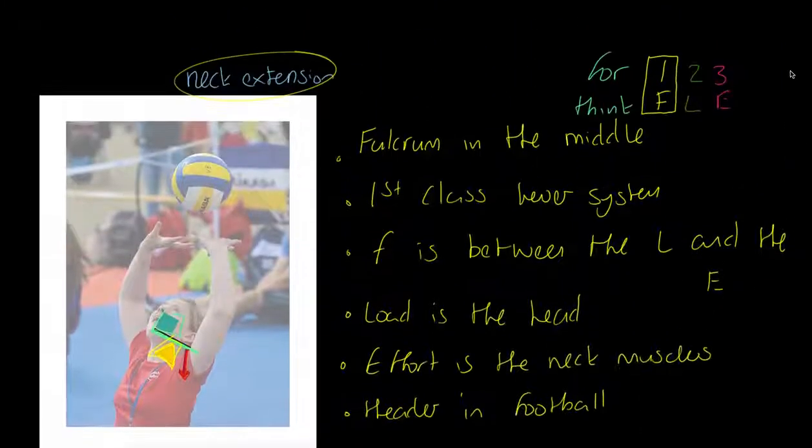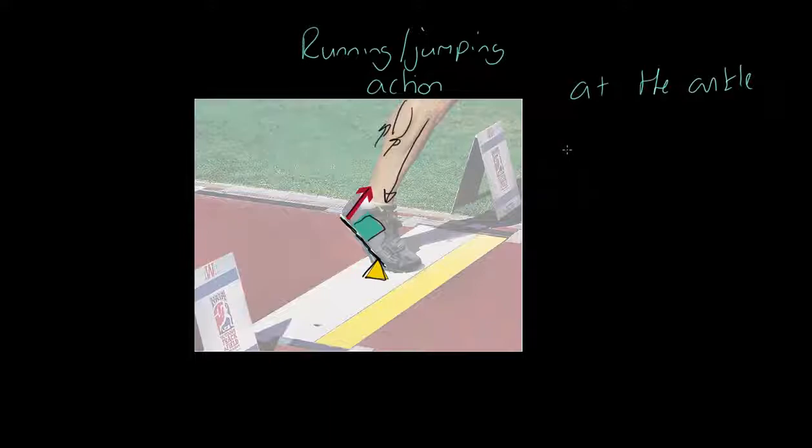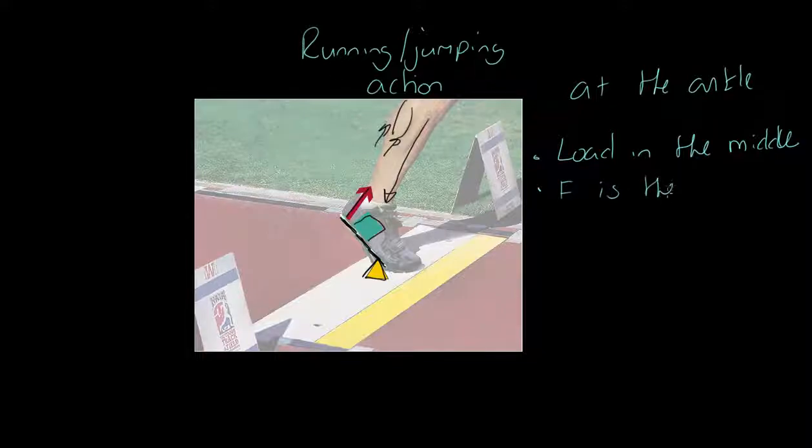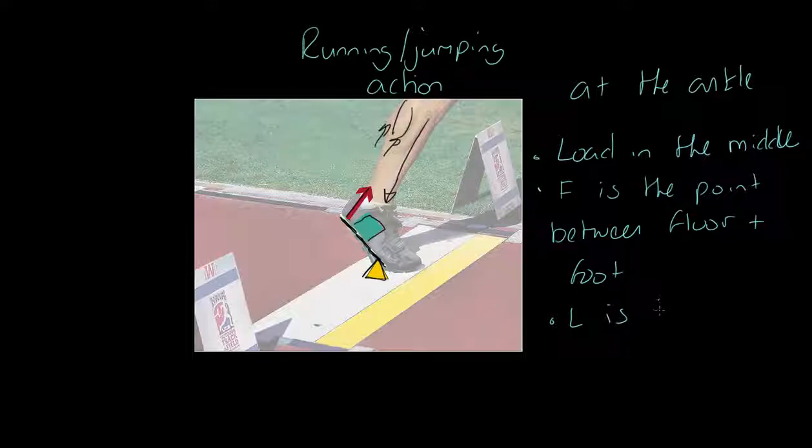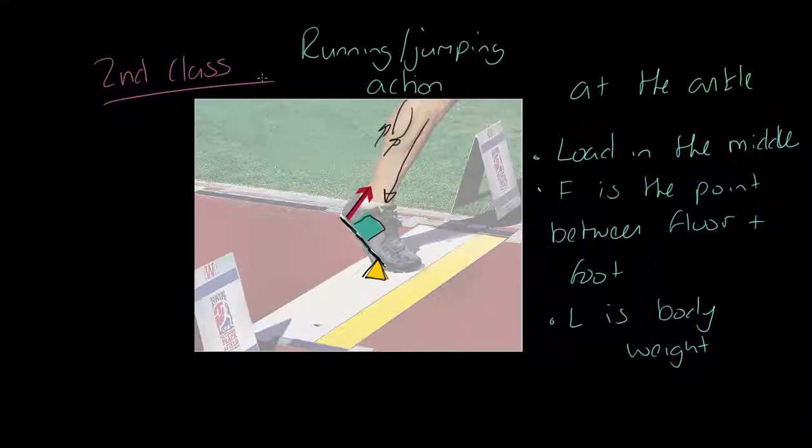So what have we got in the middle? For one, two, three, think FLE, we have our load in the middle. This has to be a second class lever. We have got the load in the middle. And we could say the load's obviously between the fulcrum and the effort. We can also say the fulcrum is the point between floor and foot. We can also say that the load is body weight. And as I said before, it's acting downwards through the tibia. That's where the centre of mass actually acts downwards in this case. So we've got this second class lever system. And what we're saying here is that it's second class because the load is in the middle. Now, the only example of a second class lever is in this kind of ankle action. So there are no others in the human body. This is the only one.